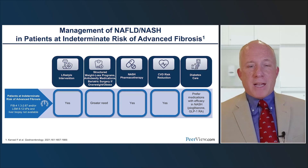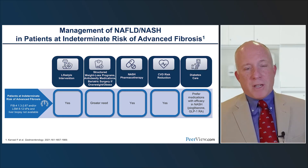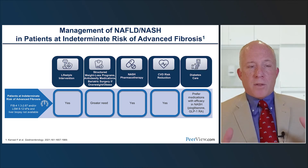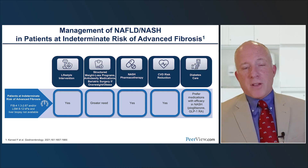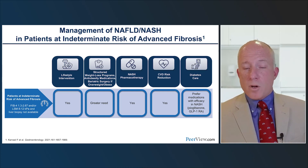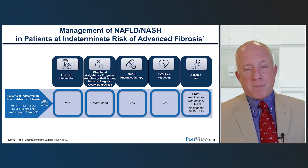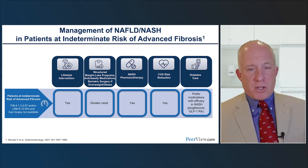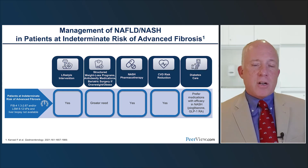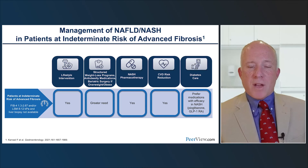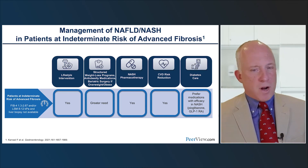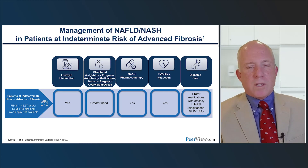For indeterminate-risk patients who remain indeterminate on both FIB4 and FibroScan, you must decide whether to manage them in primary care or refer to hepatology. If managing in primary care, do all recommended interventions plus more aggressive weight loss and specific pharmacotherapy. If referring, continue primary care management while providing earlier specialty access. Currently, it may be better to send these indeterminate-risk patients at the second stage to hepatology so they can be enrolled in trials and access liver-specific treatments.